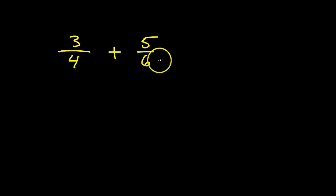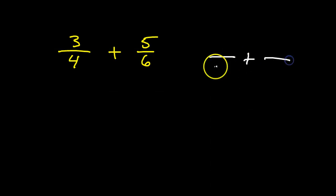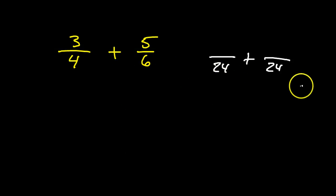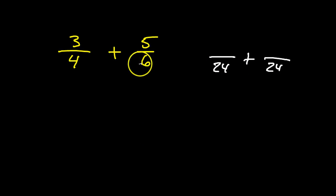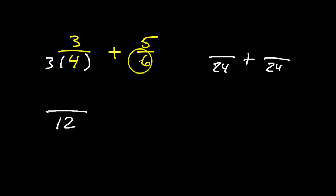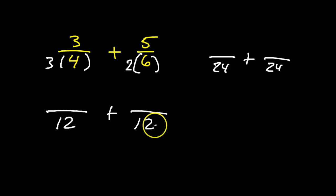You can turn both of these into the same number by multiplying them by each other. A lot of people will just make them both into 24s, because 6 times 4 is 24. But 24 is unnecessarily big. There's a smaller number that both 4 and 6 can become. If we multiply 4 by 3, that makes 12. If we multiply 6 by 2, that makes 12. So 12 is the smallest number that 4 and 6 can both become — 12 is the least common multiple.